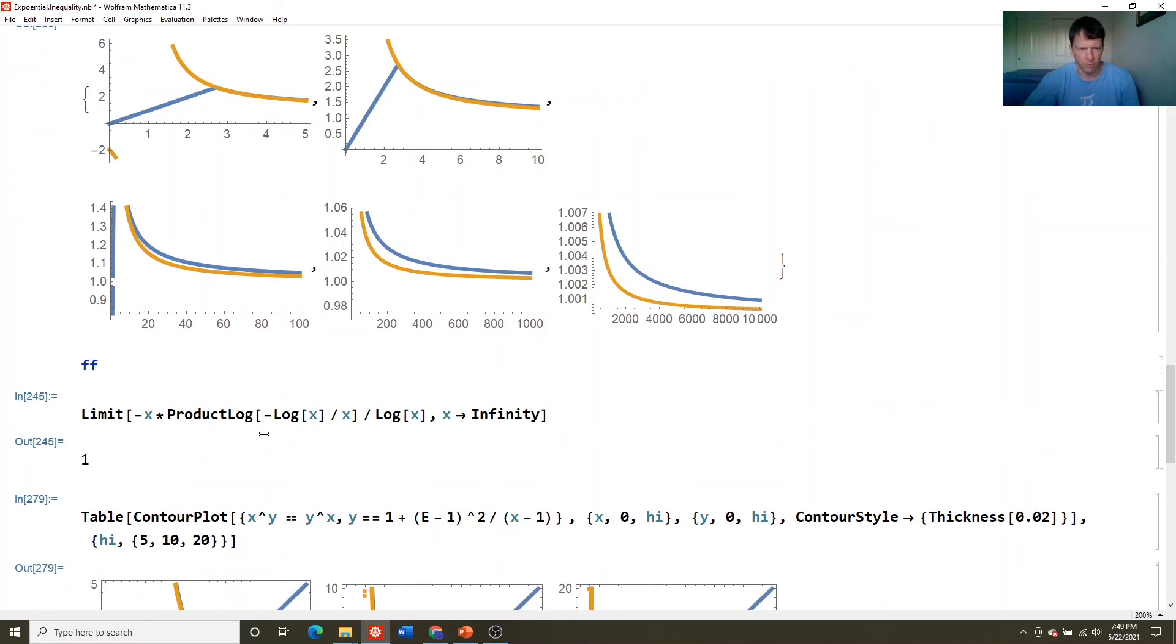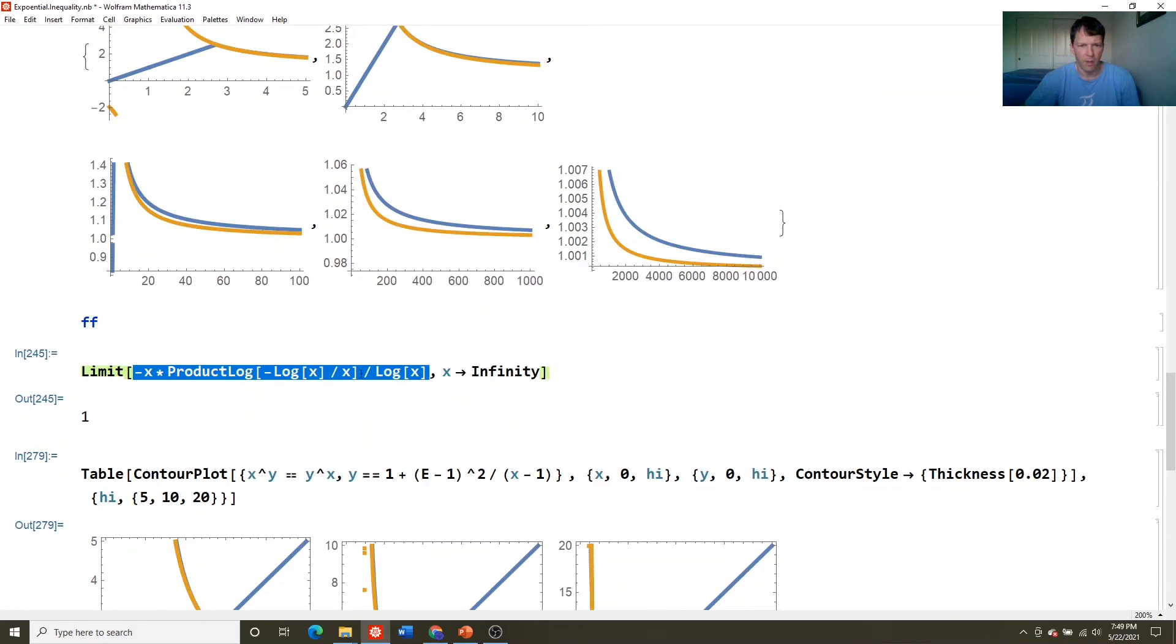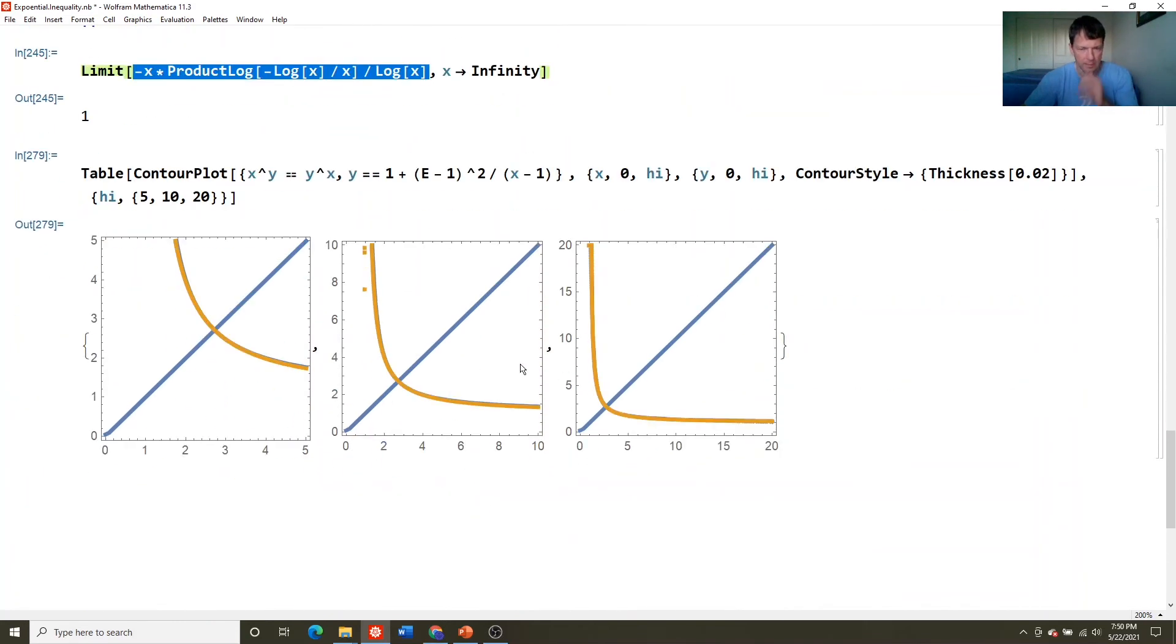And here, what am I showing here? I'm taking this limit of this thing. Yeah, the asymptotic behavior of this is one. Yeah. It has asymptotes at one. So it's basically like a hyperbola.